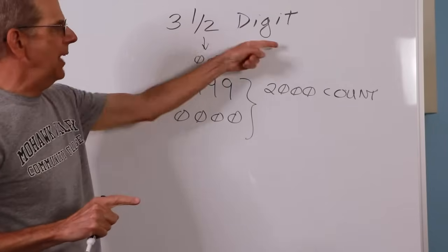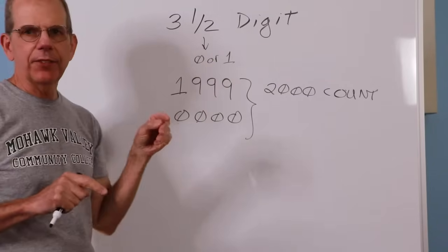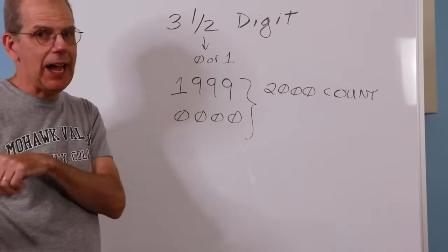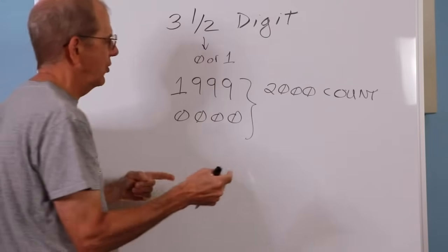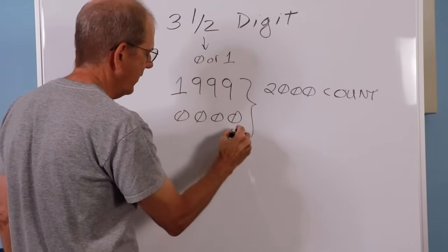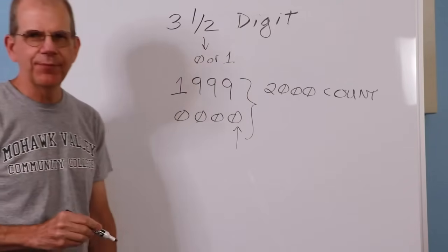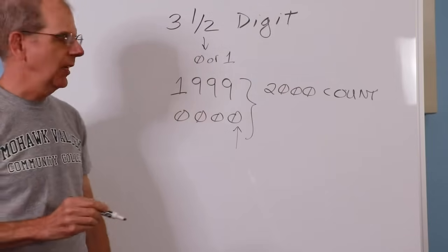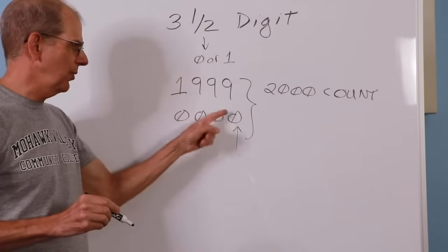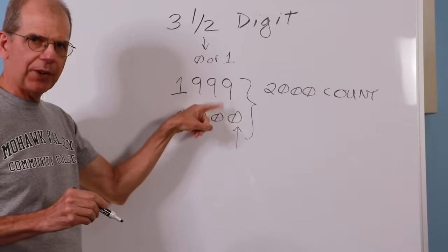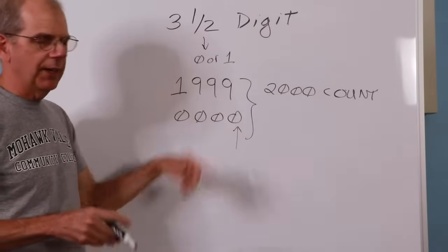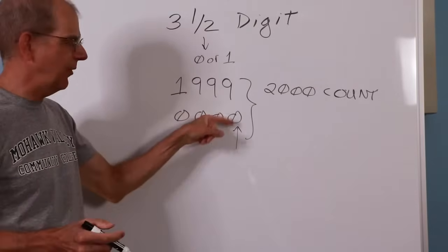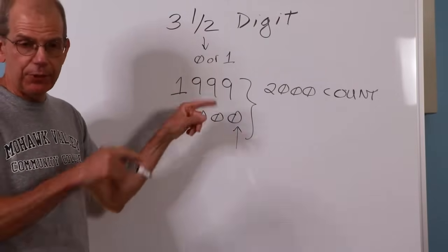So, when we talk about an accuracy spec that is so many counts, what we're referring to is the least significant digit. This guy way down here. So, plus or minus 1 count literally means this digit could flip back or forth by 1. If it's a plus or minus 3 count, then that thing can go up 3 counts. 3 values.